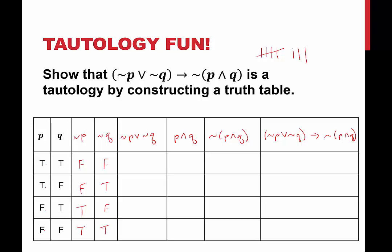Not p or not q — in order for this to be true, we need one or both to be true. We have false or false — that's false. False or true — that's true. True or false is true. True or true is true. For p and q — in order for p and q to be true, we need both to be true. True and true is true. True and false is false. False and true is false. False and false is false. Now for the negation of p and q, we're just taking that column and negating it — so that would be false, true, true, true.